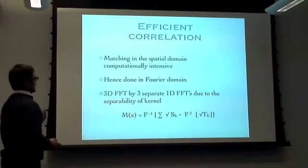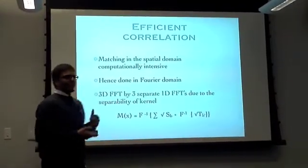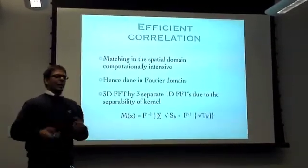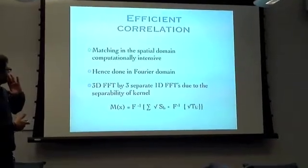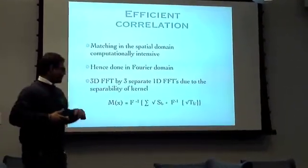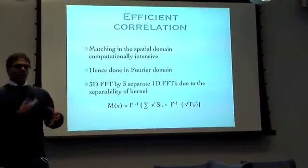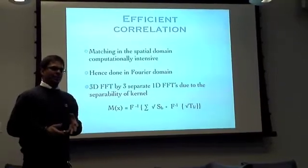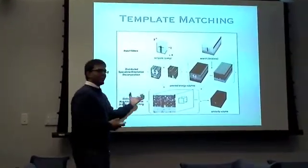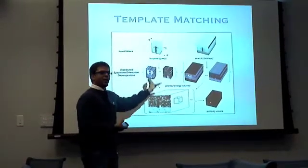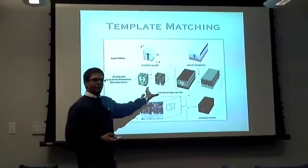Doing this in the spatial domain takes a ridiculously long time because we're dealing with dense three-dimensional representations. An efficient way is to do it in the Fourier domain, taking advantage of the convolution theorem — convolution in the spatial domain is simply the product of the Fourier transforms in the frequency domain. We do correlation in the frequency domain, and three-dimensional FFTs are linearly separable, which greatly reduces computational expense.